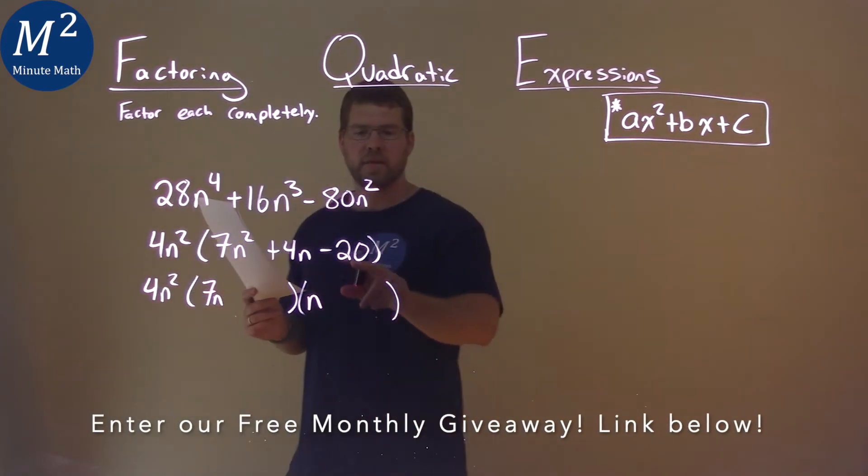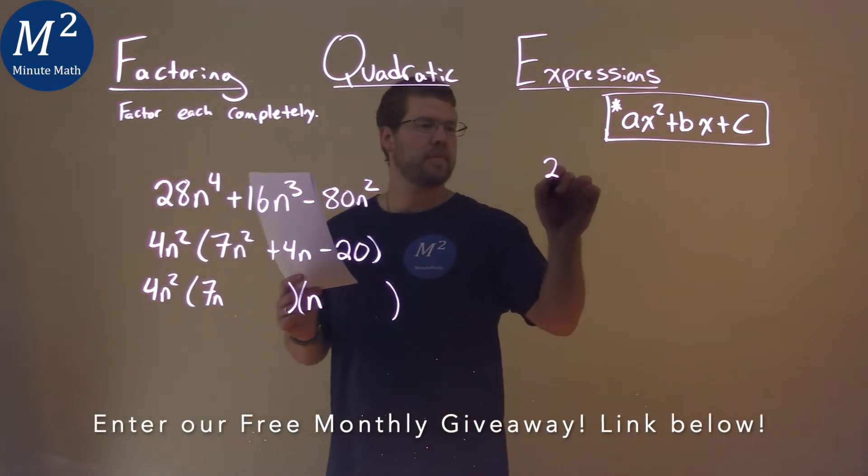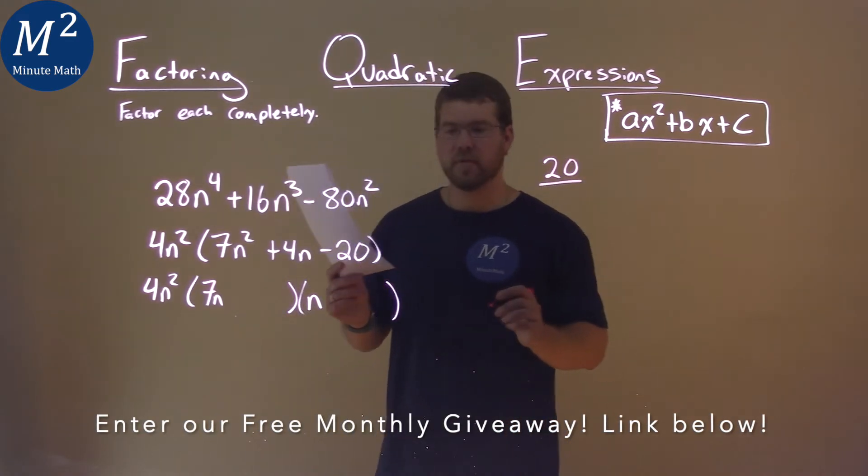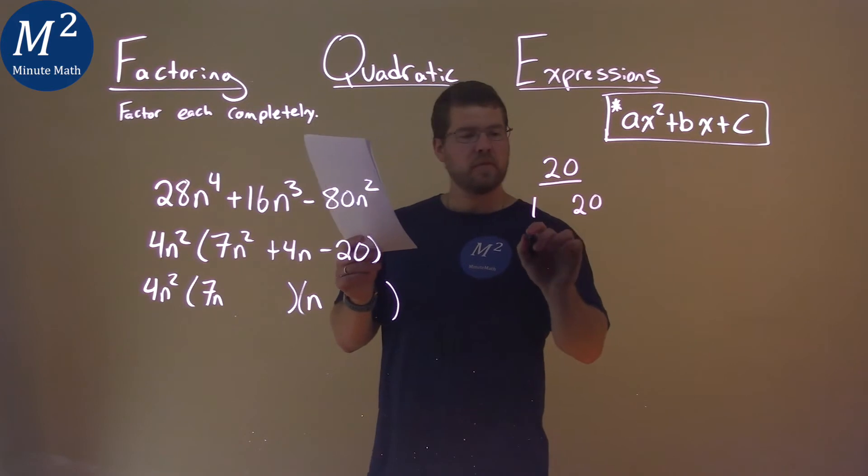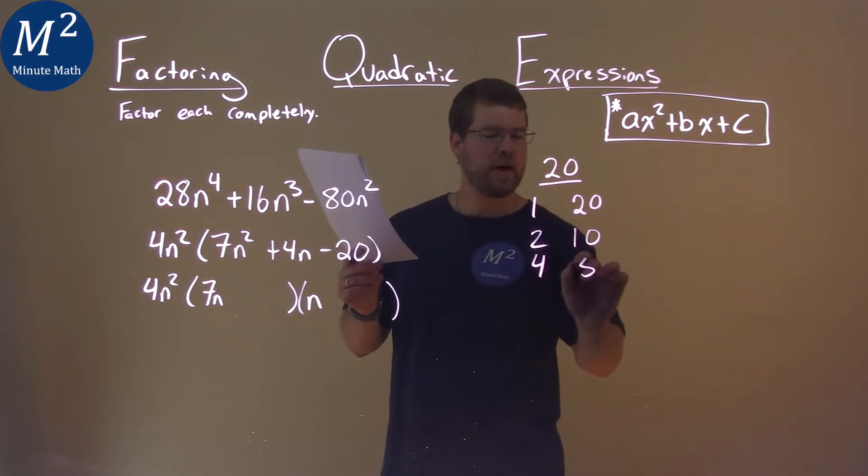So now I have to look at the negative 20. I'm going to write a positive 20 and write the list of the two numbers that multiply to be 20. 1 and 20, 2 and 10, and 4 and 5.